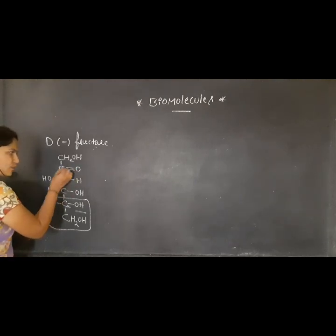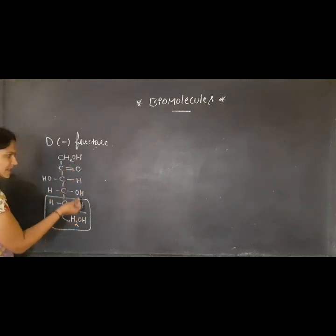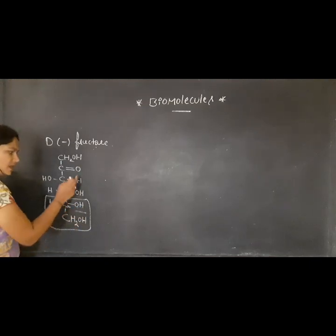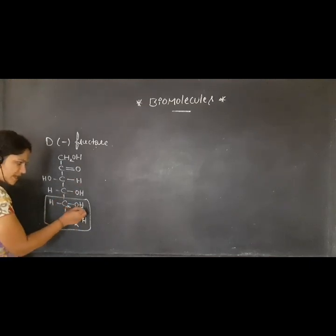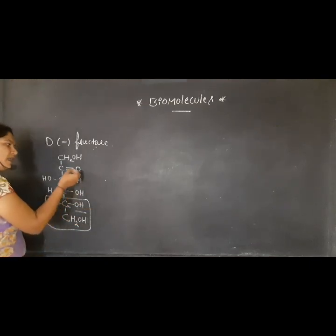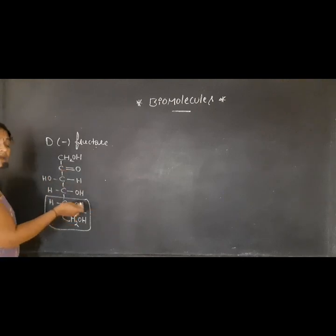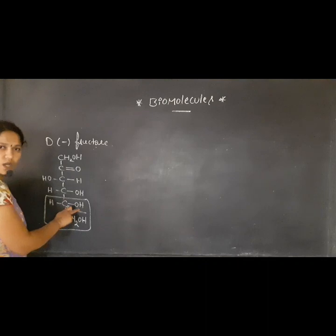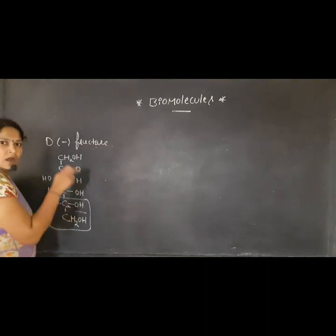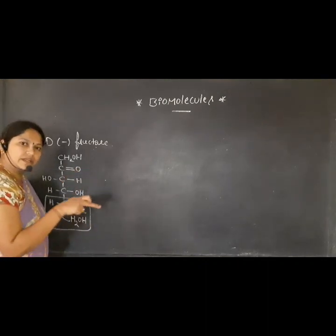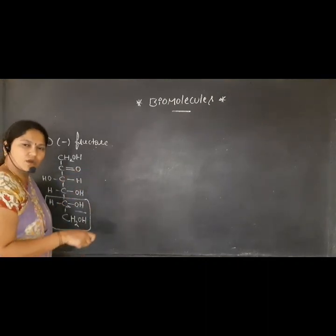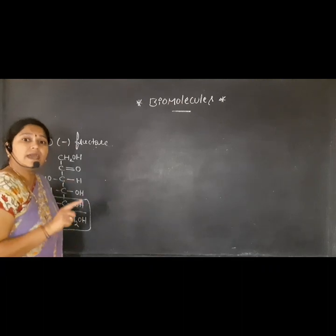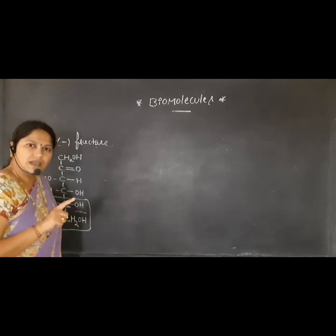The C double bond O converts to a single bond and reacts with the OH. The OH gets abstracted by the oxygen atom, and the carbon forms a bond with oxygen. Whenever carbonyl compounds react with alcohol — whether aldehyde or ketone — the bond formed is known as a hemiacetal bond.